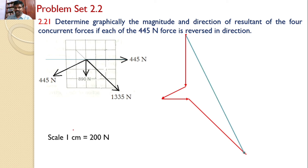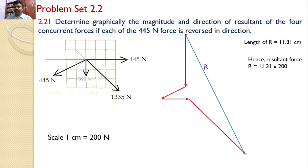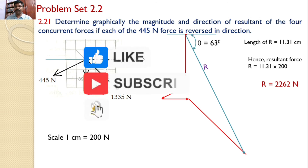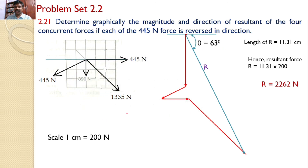Please concentrate — the resultant force is this line here. To find the magnitude, I need to measure this length. After measuring, I get that length as 11.31 centimeters. Converting to force using the same scale, the resultant R equals 11.31 into 200, which gives R equal to 2262 Newtons. For the direction, I draw a horizontal line and measure the angle using a protractor, getting theta equal to 63 degrees. Hence, the final answers are R equal to 2262 Newtons and theta equal to 63 degrees.